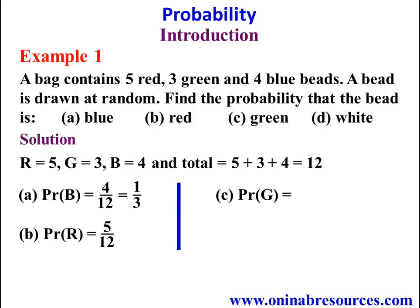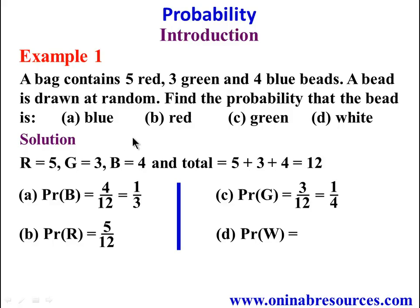For C, we are looking for the probability of picking a green bead. We have 3 green beads over 12 total, which reduces to 1/4 in simplest form. For D, the probability of picking a white bead: do we have white beads in the bag? No. So we have 0 beads out of 12, which gives 0. Since there are no white beads, it is impossible to pick one.